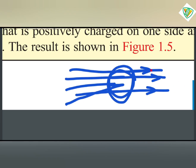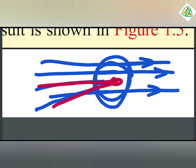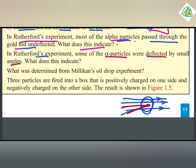However, some of the alpha particles were deflected by small angles, and a very few were deflected by large angles, indicating a small, dense nucleus at the center.